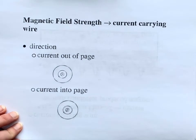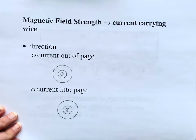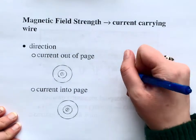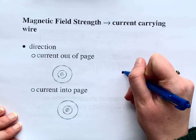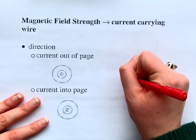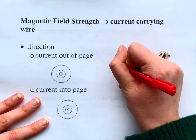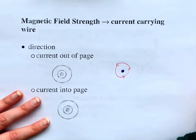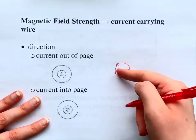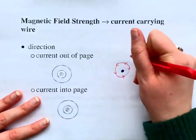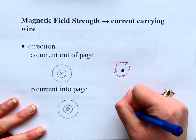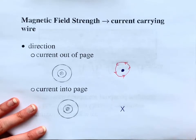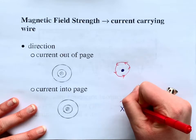If we have a current going out of the page, we draw a dot — that means out of the page. If a current is coming out of the page, the magnetic field is going to be going counterclockwise around it. If we have current going into the page, we communicate that by putting an X, and then the magnetic field is going to be going the opposite direction — clockwise.